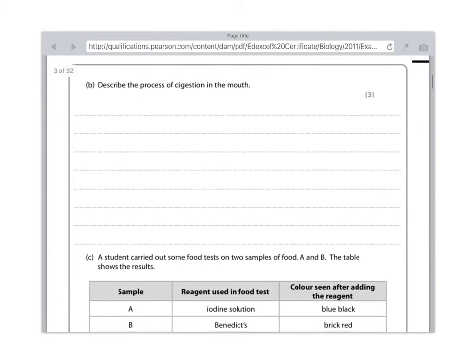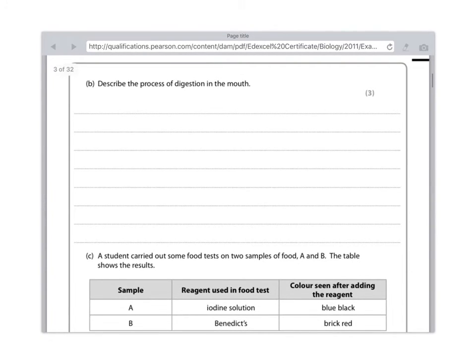So the next part of the question, it's a bit longer. It's worth three marks. Describe the process of digestion in the mouth. So take a step back and think about the two processes which happen in the mouth. There's a physical part and a chemical part. The physical part, you would write physical digestion involves chewing using the teeth. So that's the first part of the question answered.